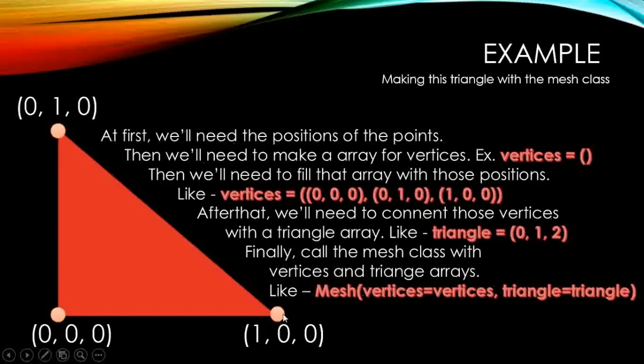These three points like this: vertices equal to, this is the first vector point, this is the second vector point and this is the third vector point.